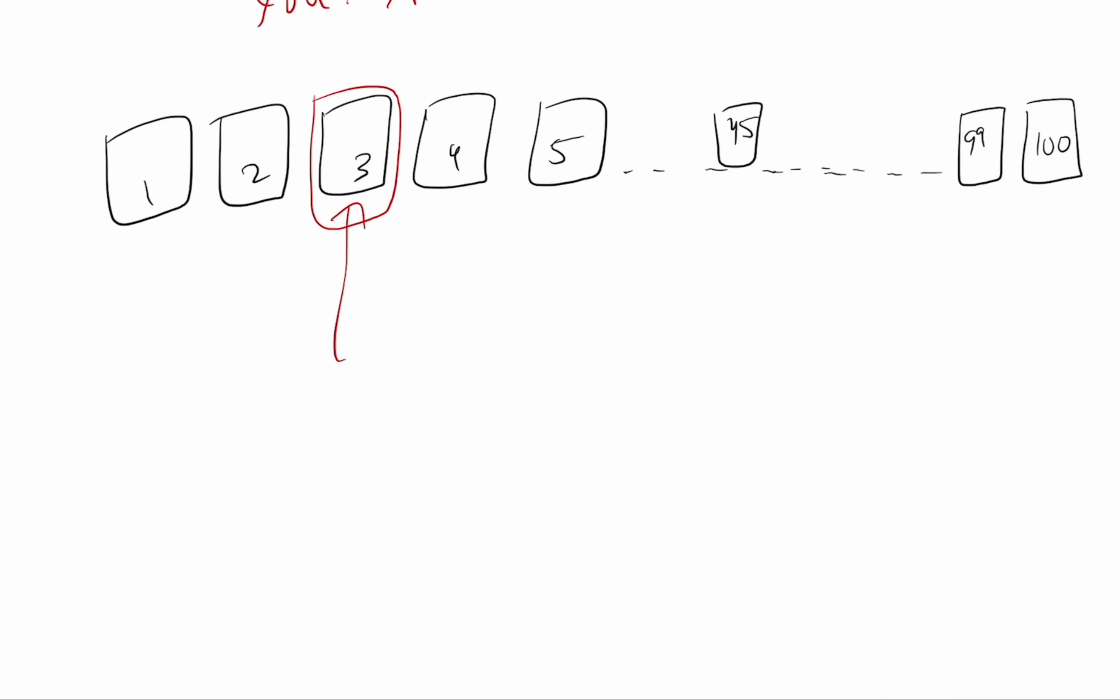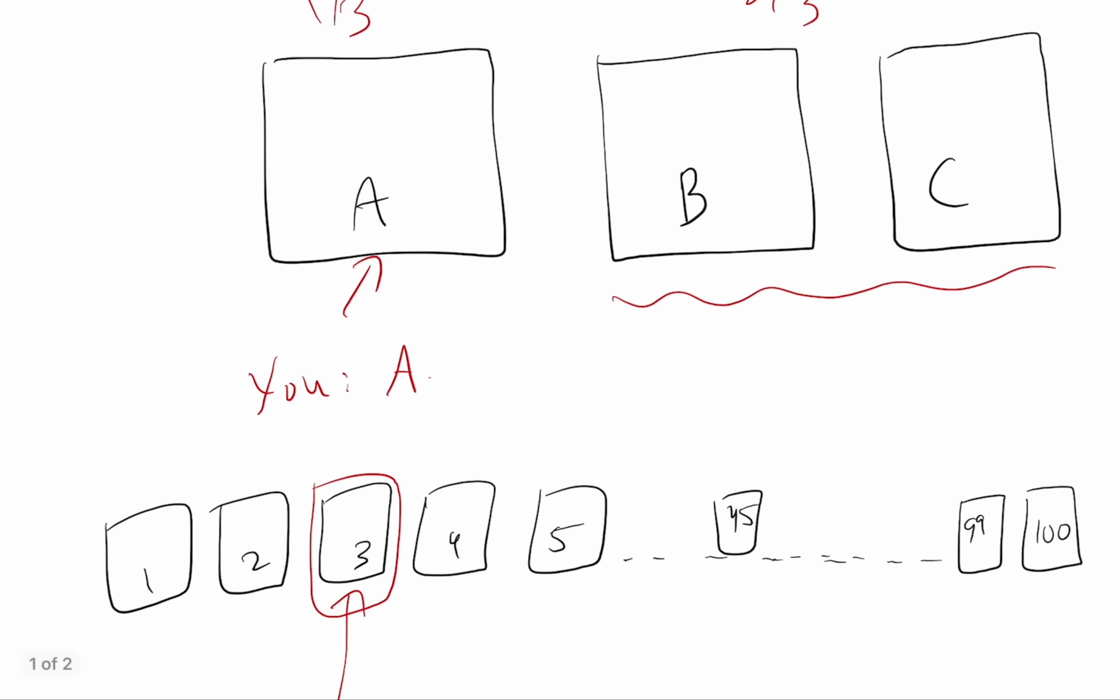Now, the game show host, who knows where the true prize is, and who knows obviously which one you picked, now is going to systematically open, out of the 99 closed doors, they're going to open 98 of them, meaning all but one. If you think about it, that's kind of what they did over here, right?